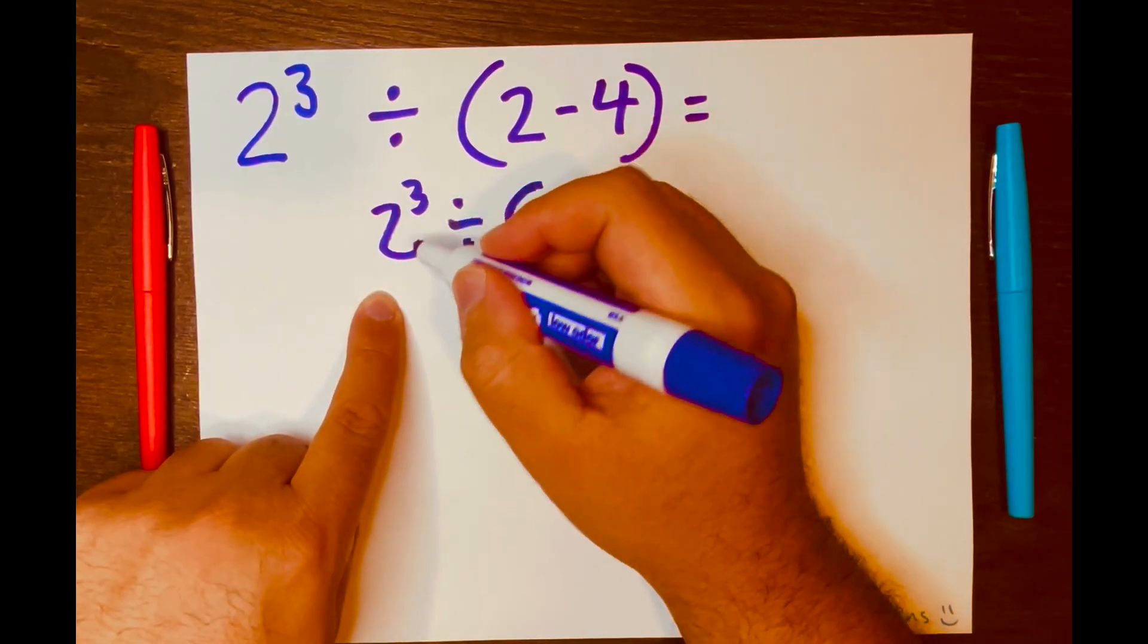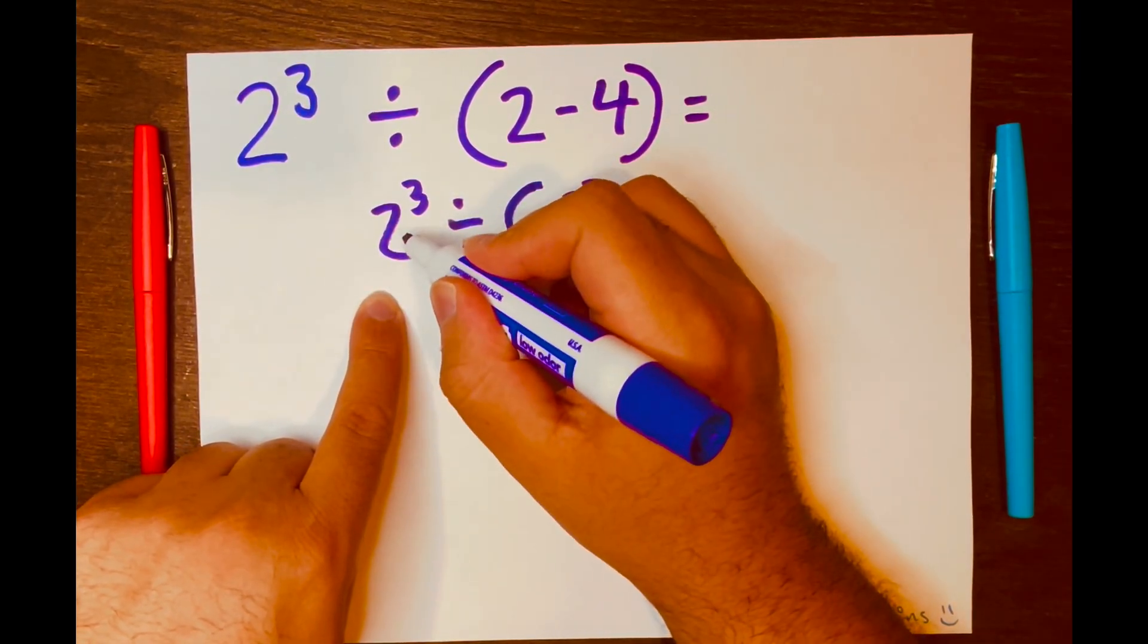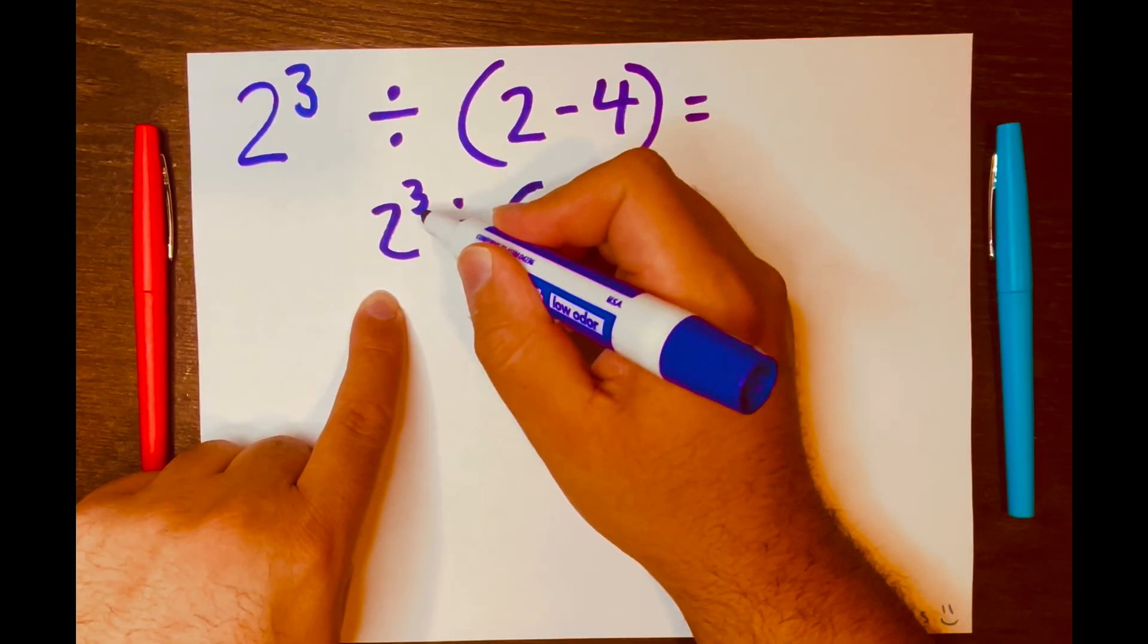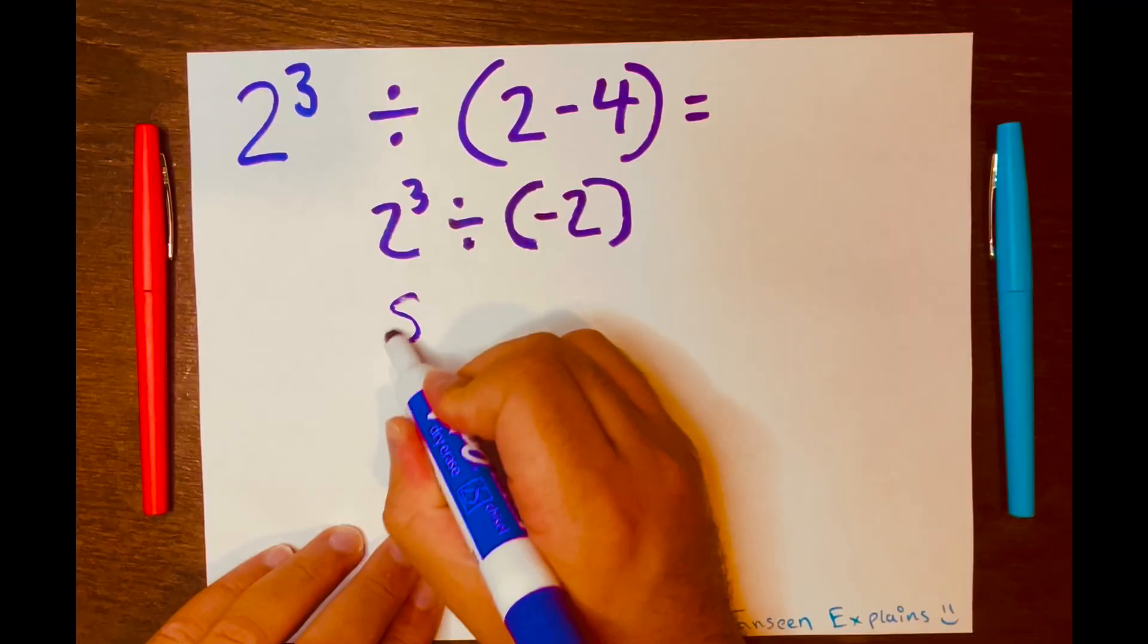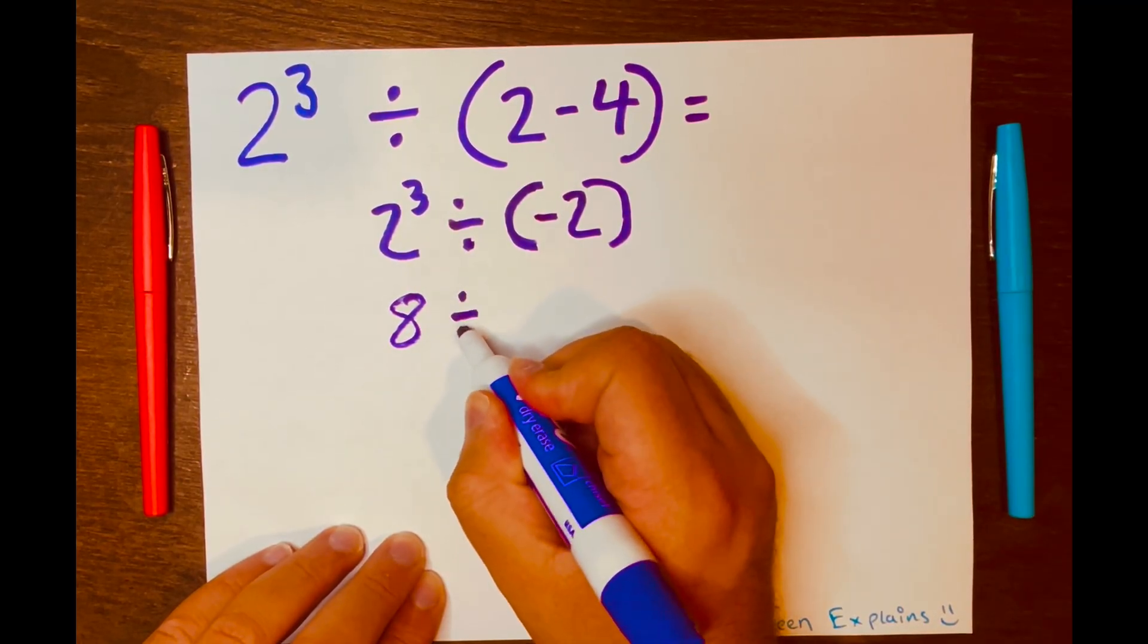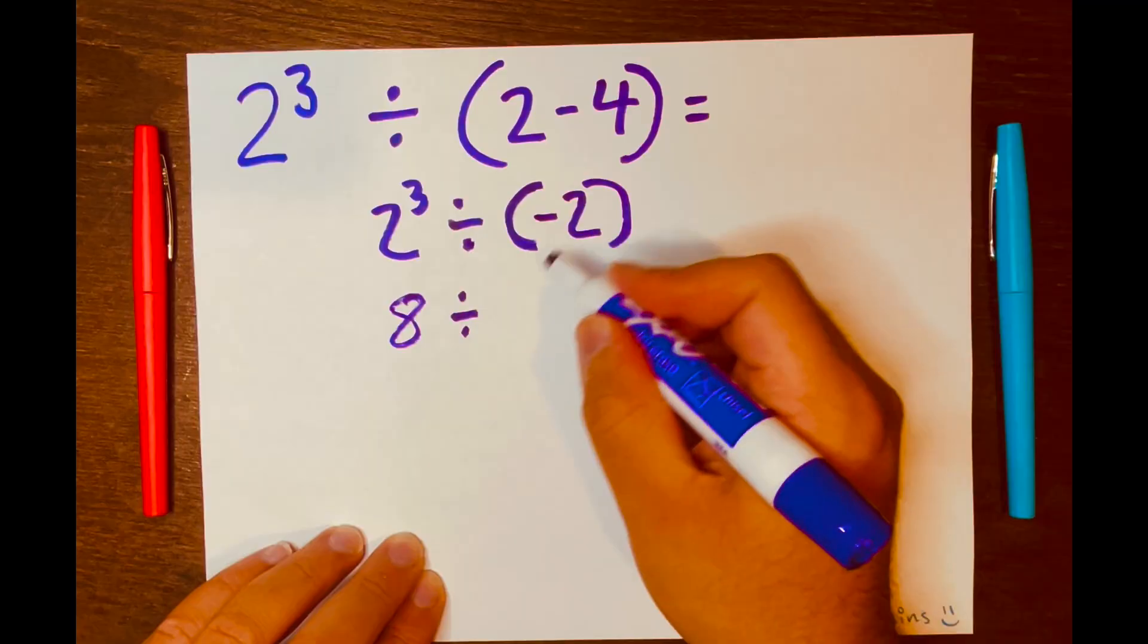Well, the 3 is telling you to multiply 2 three times. So 2 times 2 is 4, times 2 is 8. So I'll write 8, and then divide it by, I'm bringing down the division symbol and then I'll bring the 2.